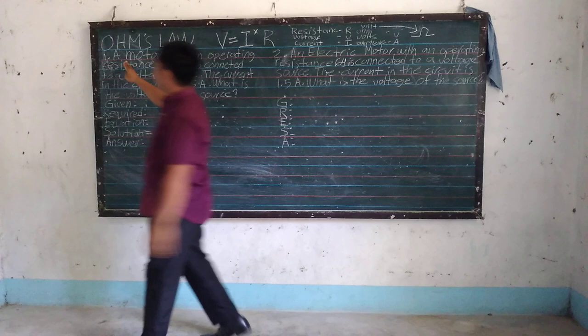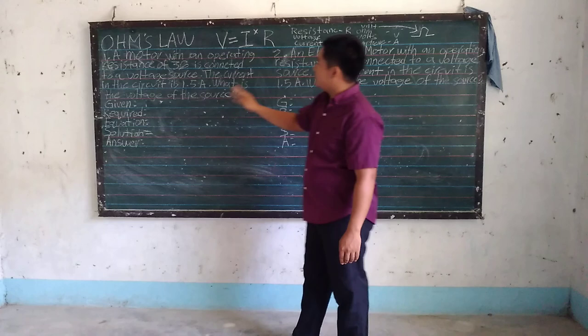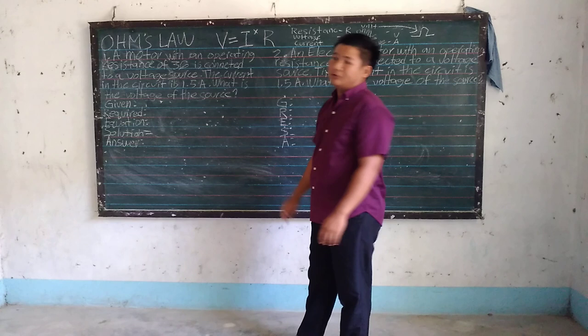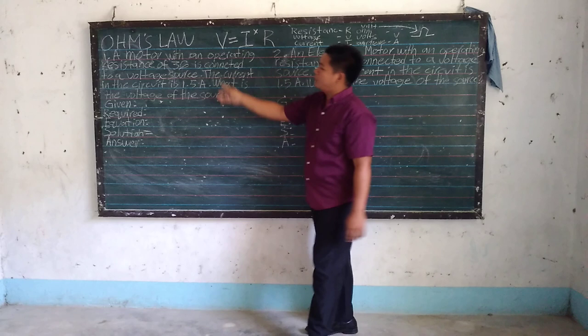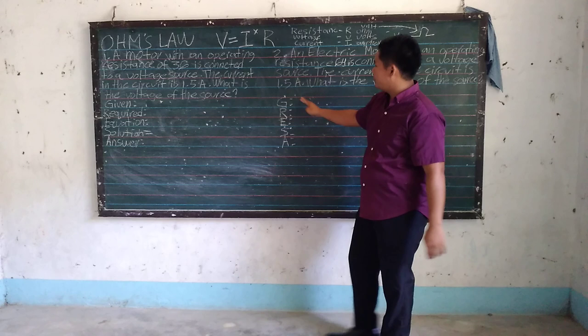So let's start with question number one. The problem is: a motor with an operating resistance of 36 ohms is connected to a voltage source. The current in the circuit is 1.5 amperes. What is the voltage of the source? The easiest way to solve this Ohm's Law problem is by using the GRESA method.